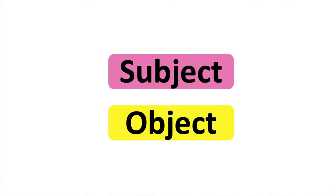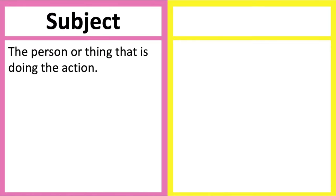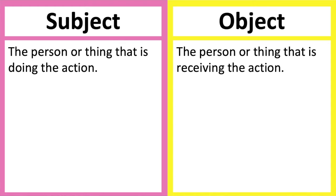In this video, we will learn the difference between the subject and the object. In English, sentences often have a subject and an object. The subject is the person or thing that's doing the action. The object is the person or thing that's receiving the action.